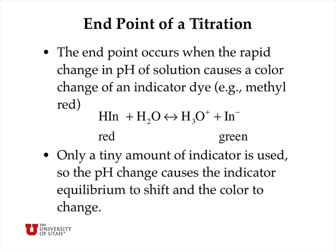The endpoint of a titration occurs when a rapid change in pH causes a color change of an indicator dye. All indicator dyes are both strongly colored and are acids and bases, and typically the acid form has a very different color than the base form. Only a tiny amount of indicator is used, so the pH is controlled by the titration, but the rapid change in pH causes the indicator acid-base equilibrium to shift. Because it must satisfy its own equilibrium constant, this rapid pH change causes a rapid shift from the acid form to the base form, producing a color change — in this case from red to green.